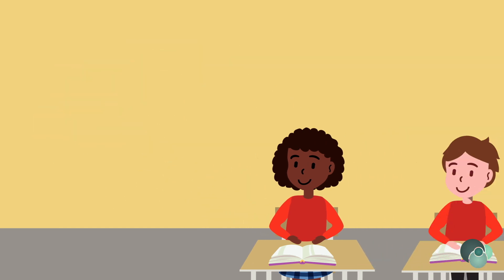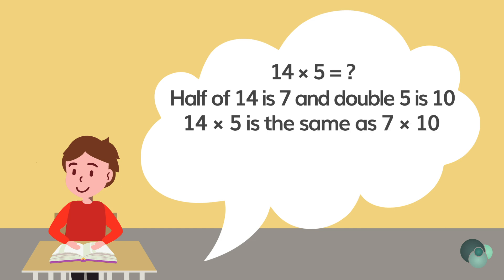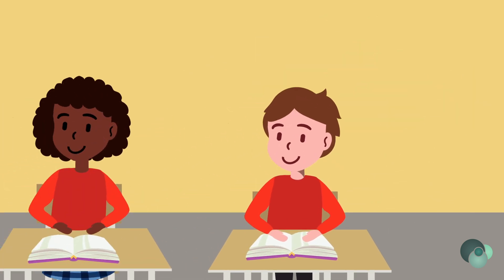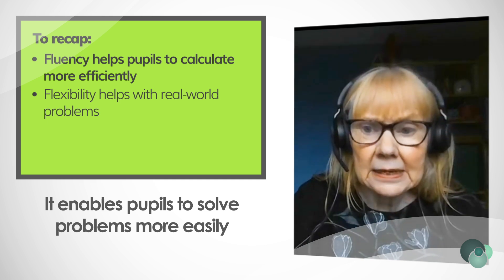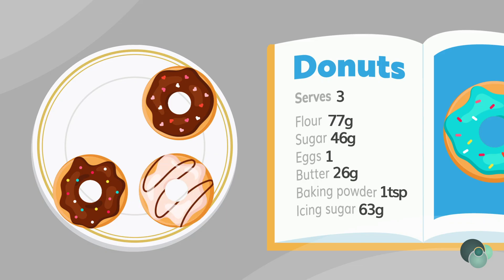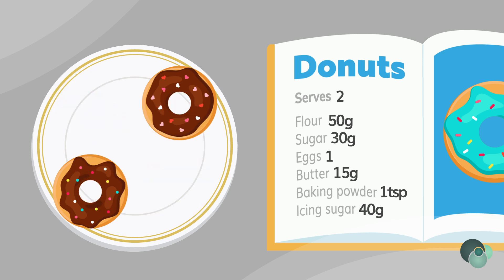Or it could be looked at by halving one of the factors and doubling the other to transform it into an equivalent calculation of 7 multiplied by 10. Also, it enables pupils to solve problems more easily, being able to scale up or down ingredients, for example in a recipe, by using multiple known multiplication facts and applying them to other numbers.